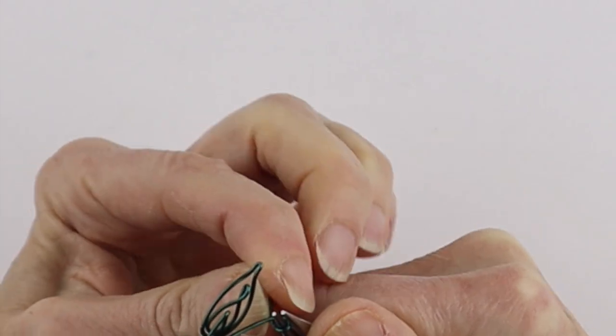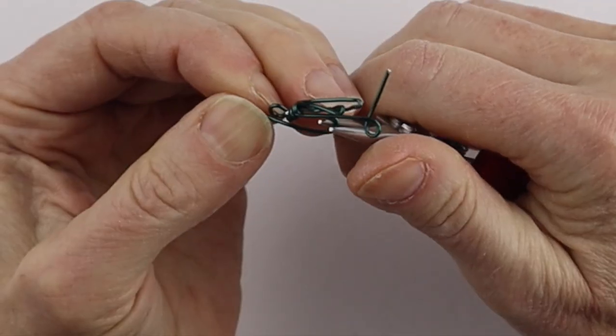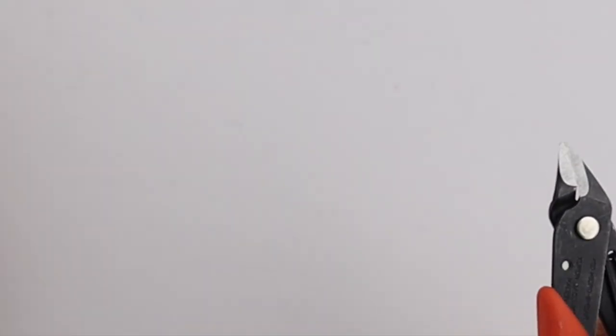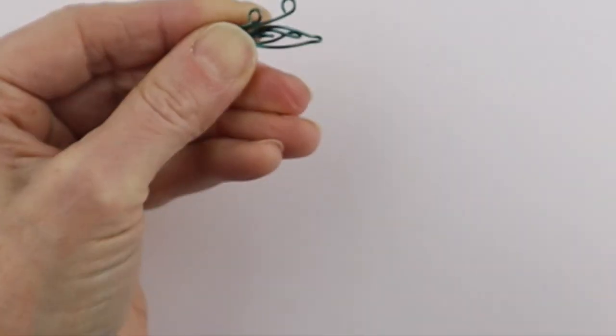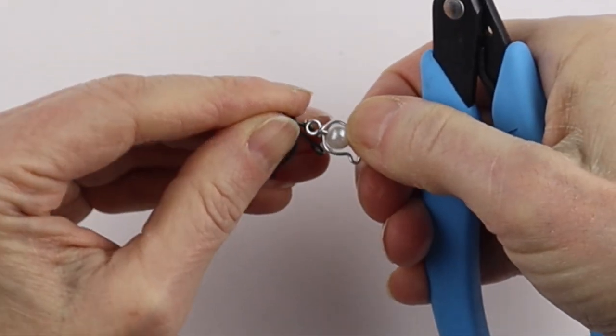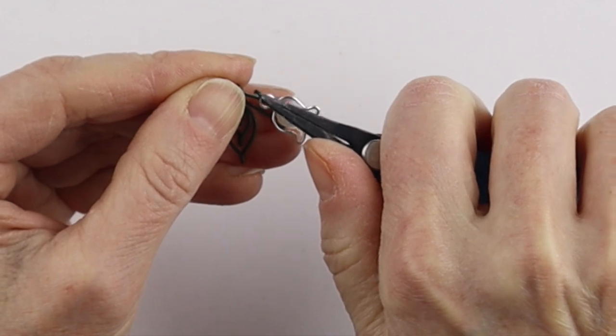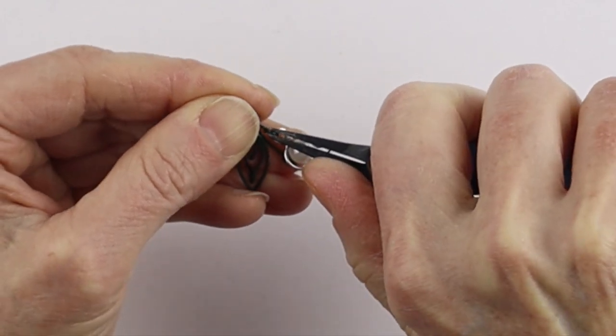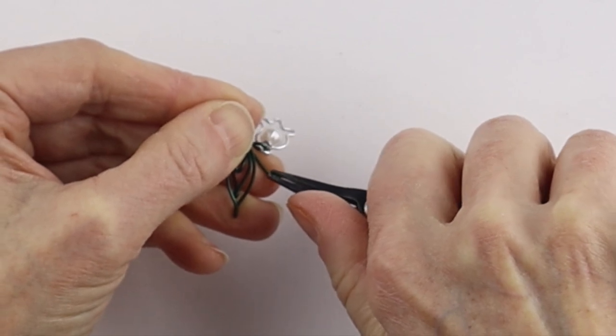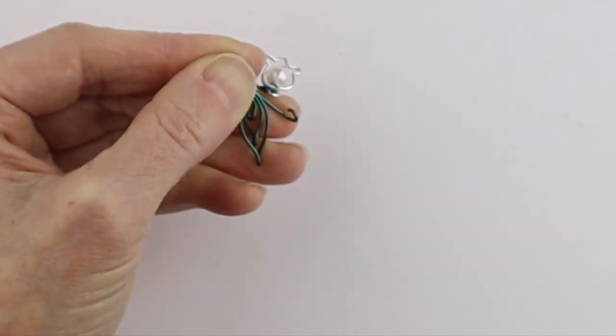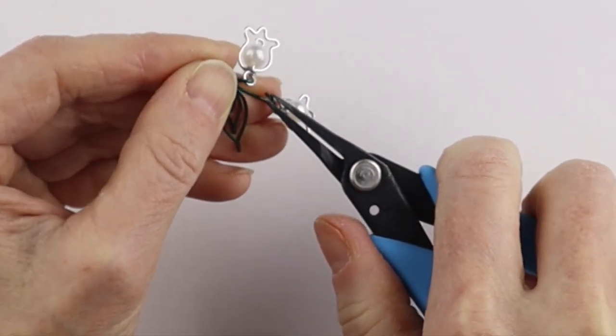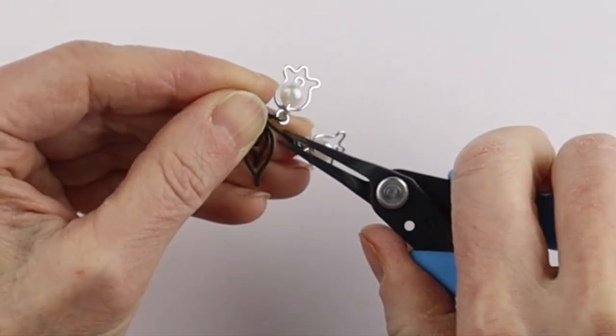Complete those loops. Clip that one flush, and clip that one. Open that up, put on our first flower, close it. And then this one, open it up, put on the flower, and close it.